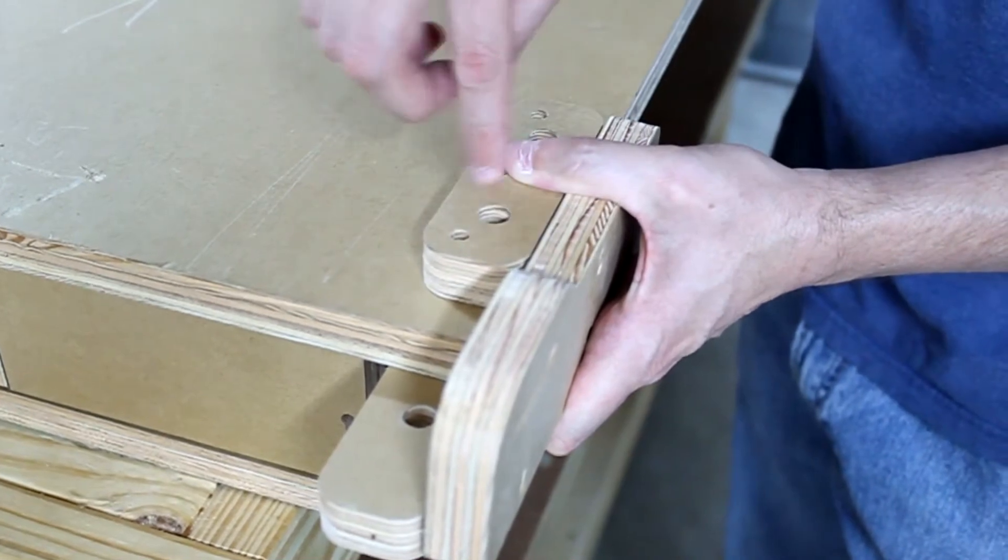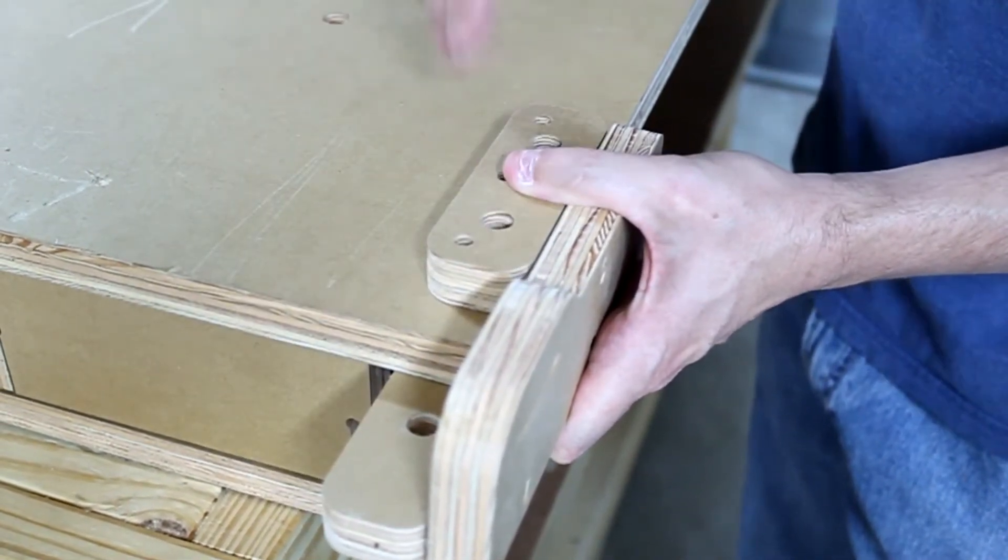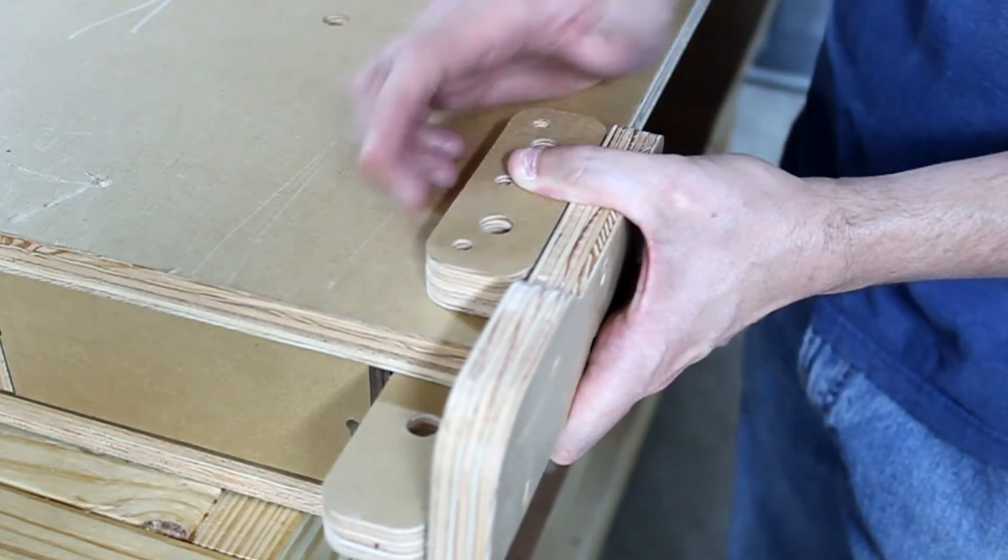These three holes align with the three holes on the bottom. We're going to drill all the way through the table and use long screws and nuts to hold that in.